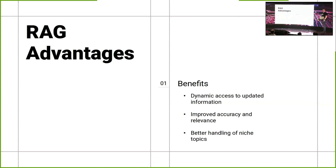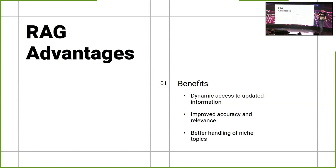RAG advantages on top of a normal LLM: We have dynamic access to updated information, compared to normal models that are static and locked in time. There's also improved accuracy and relevance — like the heat pump example where we want to discuss a specific model, not just general knowledge about the area. And better handling of niche topics, which ties into that improved accuracy around specific things.